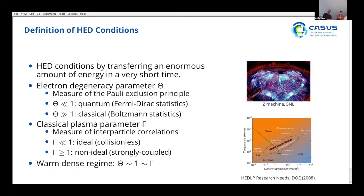Warm dense matter, or HED matter — I use those terms interchangeably, though HED often refers to even higher temperatures and pressures. What is warm dense matter? It is an extreme state of matter, loosely speaking achieved at high temperatures and high pressures. What makes it interesting is that it is difficult to define and most of our traditional standard theories break down in this regime.